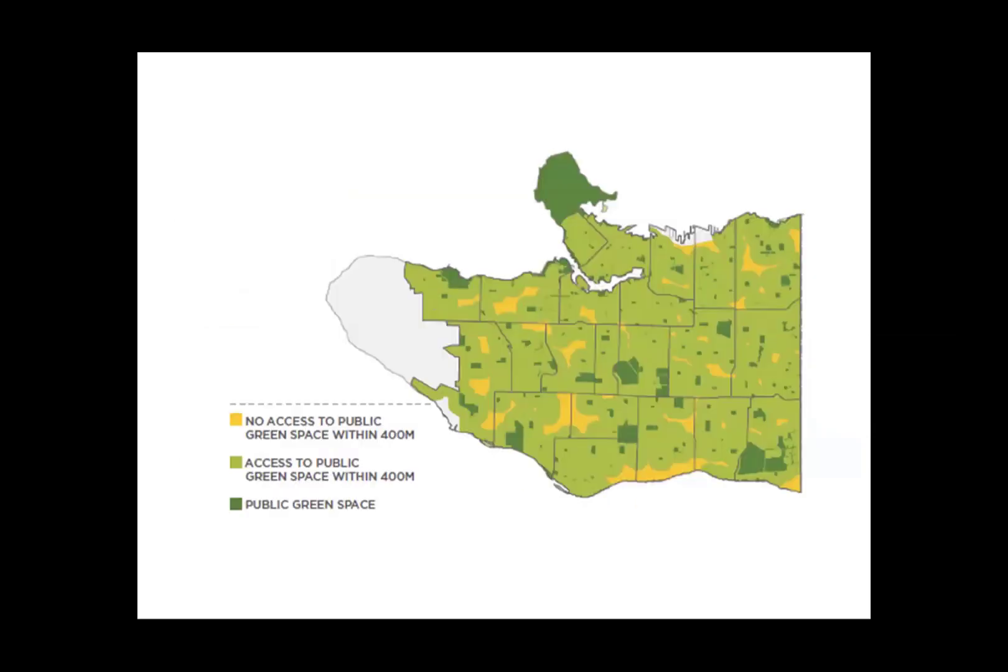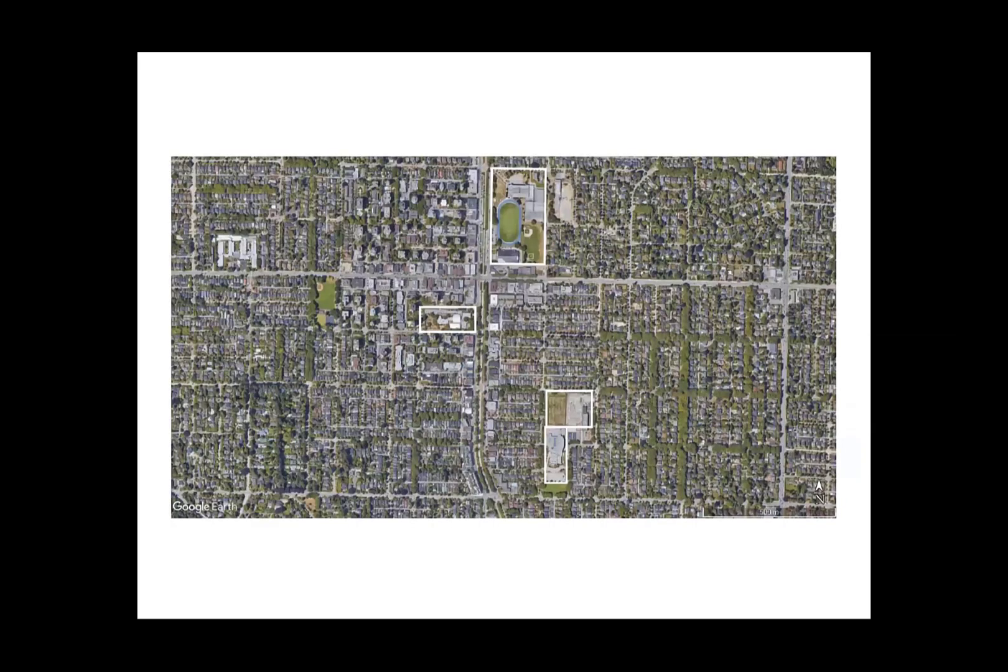Based on the accessible map made from Vancouver, there are three main schools nearby Kerrisdale Centennial Park which are within 400 meters access to public green space. So this park could be a place that students can have easy access to.